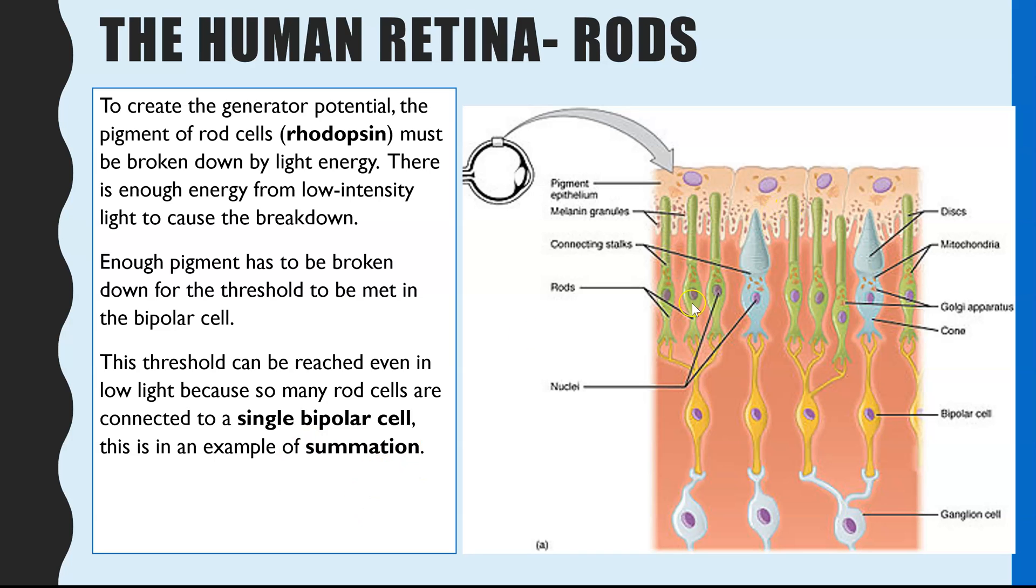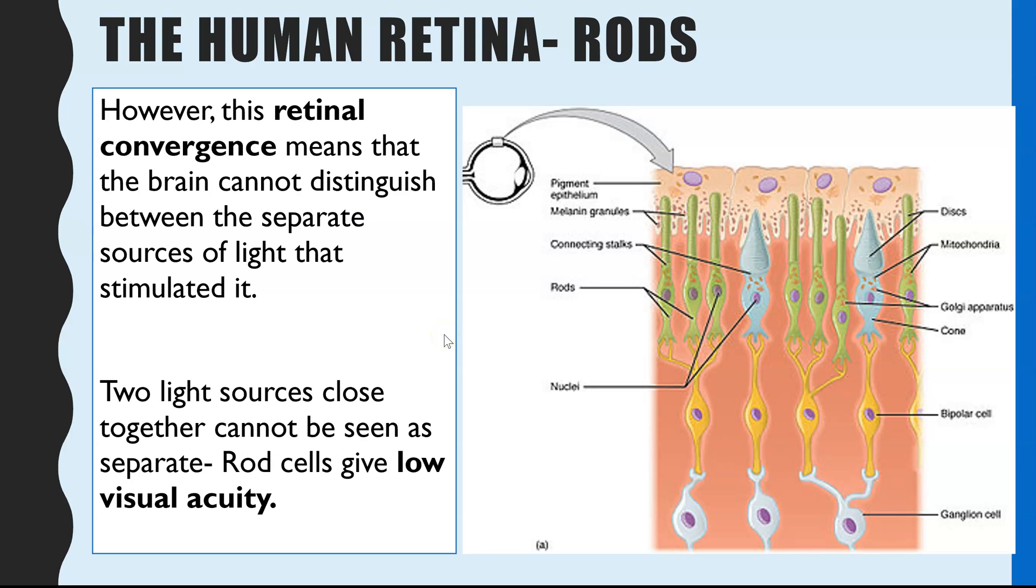Summation or sum just meaning adding together. So it's adding together the impact that we see from these three rod cells. And collectively, that is enough to reach that action potential threshold. Now that's an advantage because it means we're still able to see in black and white, even at low light intensities. So that is a survival mechanism. The downside though is it provides a low visual acuity. And what we mean by that is you don't have very accurate vision in these lower light intensities. So because you have multiple rod cells connecting to one bipolar and then one sensory neuron, your brain actually cannot distinguish between the separate light sources, because it could be a light source that was triggered by any one of these three. And therefore, two light sources close together cannot be seen as separate. So that's what we mean by low visual acuity.